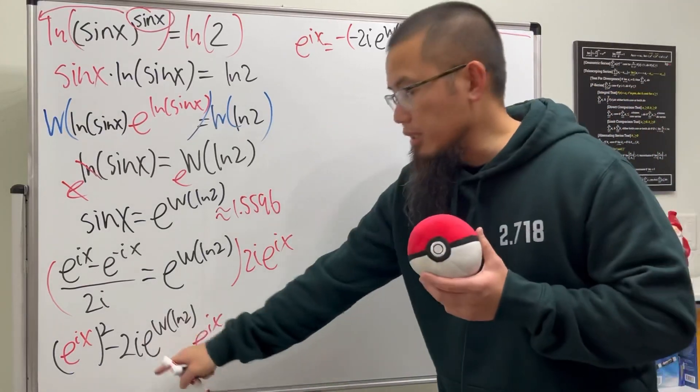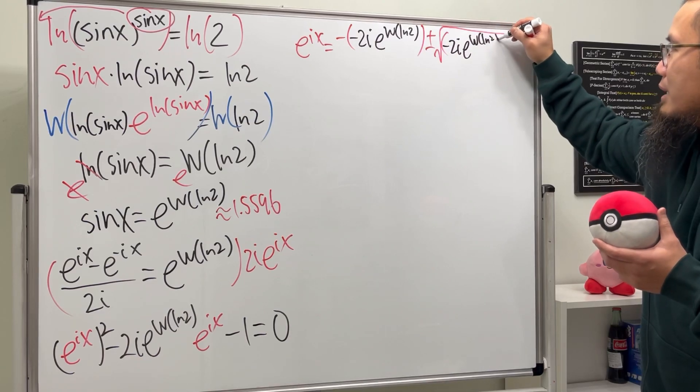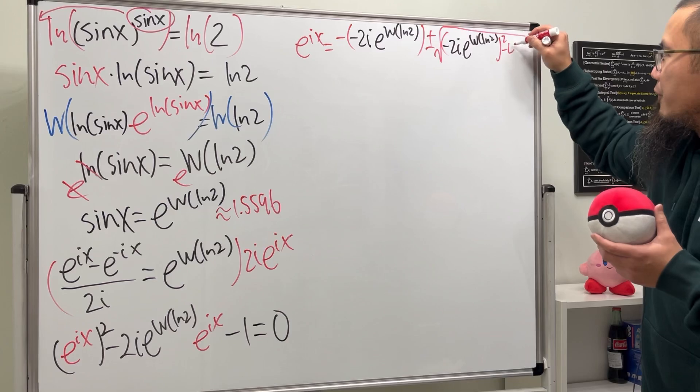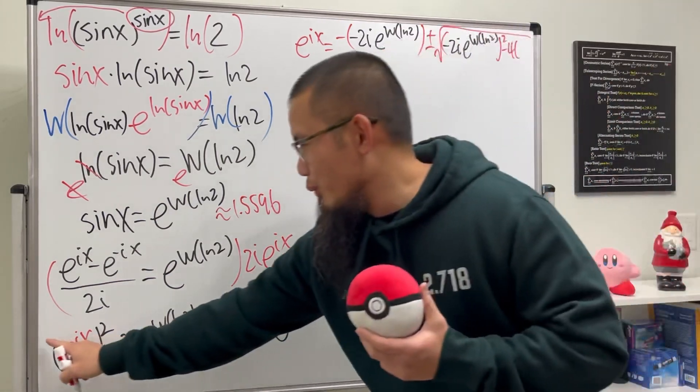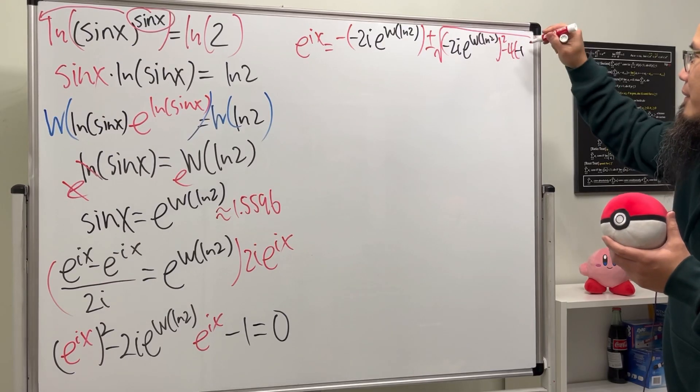So we have the b squared, which is just, again, that square. So negative 2i e to the w of ln2, squared, and then minus 4, and then a is 1, and c is negative 1. Yes, I fit everything here, I guess.